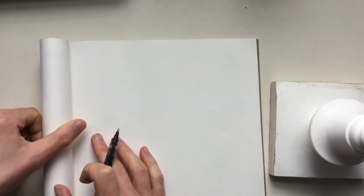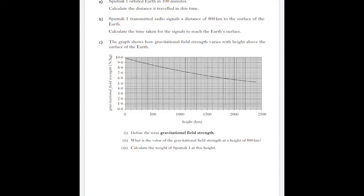Question six. Sputnik 1 is the first man-made satellite and it was launched in 1957. It orbited the Earth at a speed of 8,300 meters per second and had a mass of 84 kilograms. Sputnik 1 orbited Earth in 100 minutes. Calculate the distance it traveled in this time.